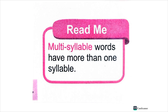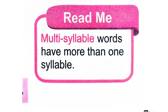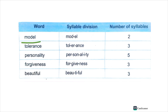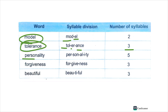Now the question is about syllables. At least one of the words must be multi-syllable — a word that has more than one syllable. For example, a two-syllable word like 'model' — that is a two-syllable word. A word like 'tolerant' has three syllables.